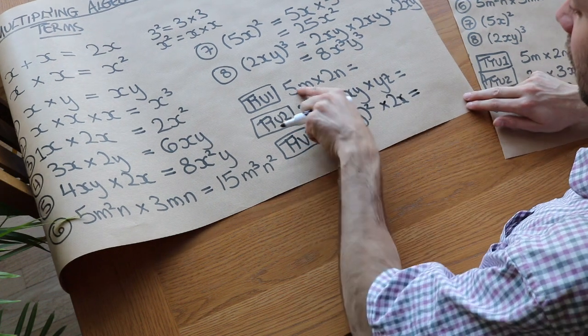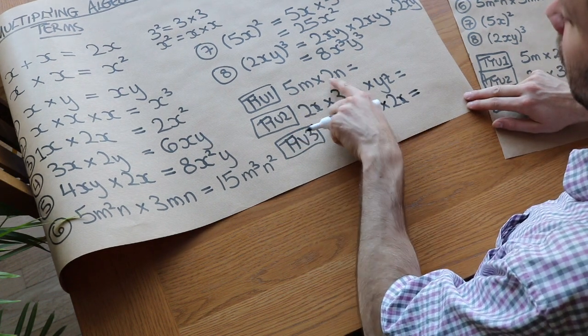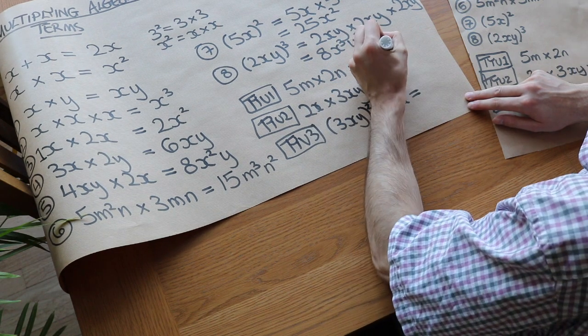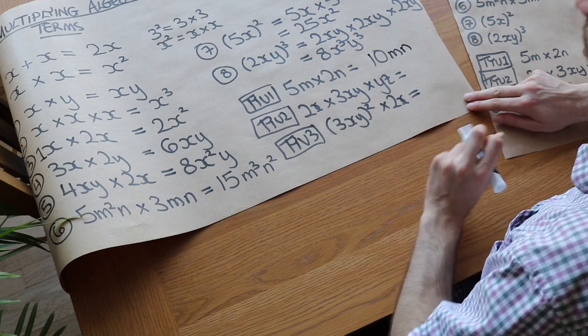Hopefully you've had a chance. Let's first do this one. We always start with the numbers first. So 5 times 2 is 10. And then we've just got the m and the n. Just a single occurrence of each.